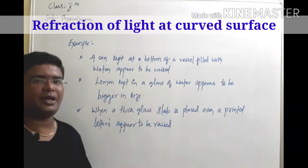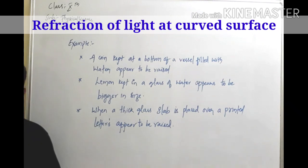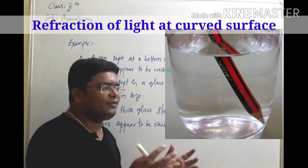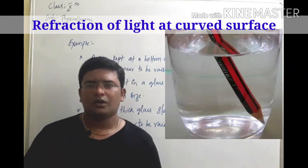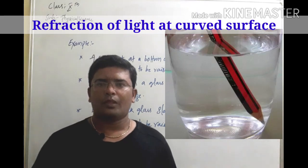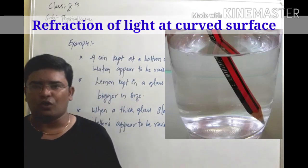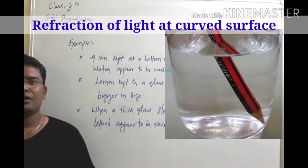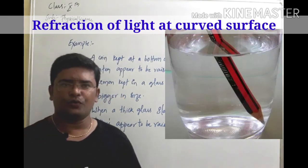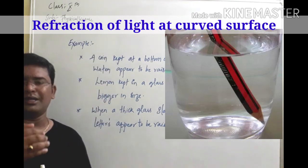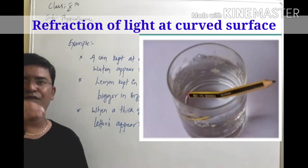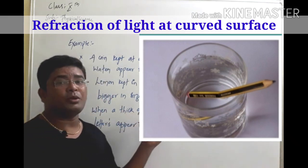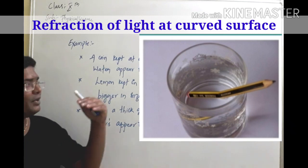Third: when a thick glass slab is placed over printed letters, the letters appear to be raised. So children, what is happening in all these above cases? Let us explore with one more example. Take a glass, fill it with water, and place a pencil in it. What do you observe? When you view from the other side of the glass and from the top, the pencil appears to be bent.